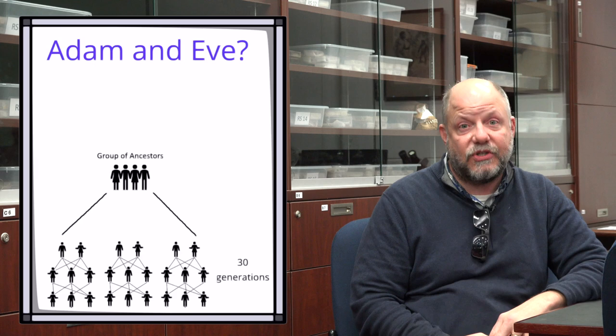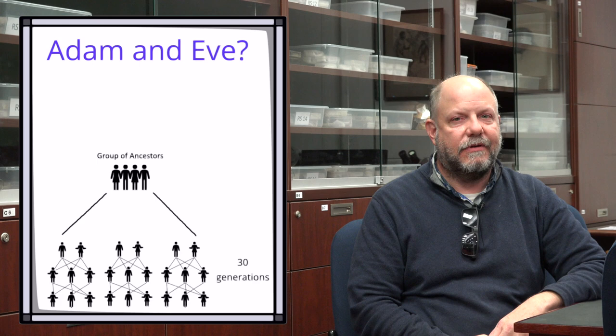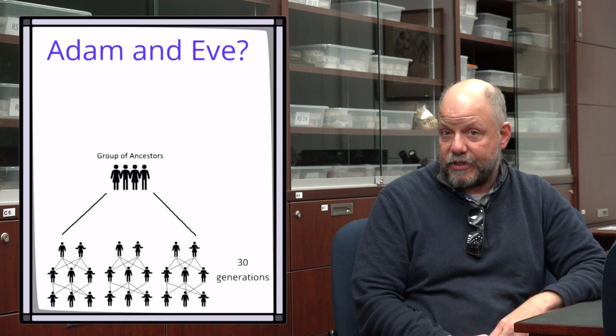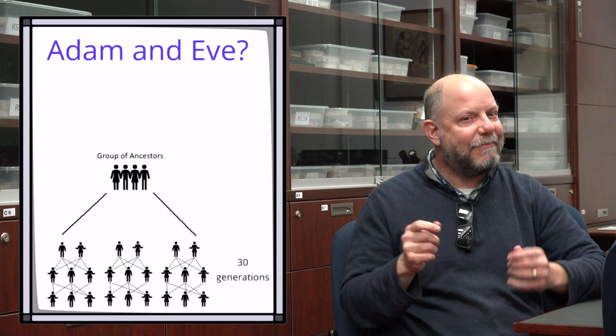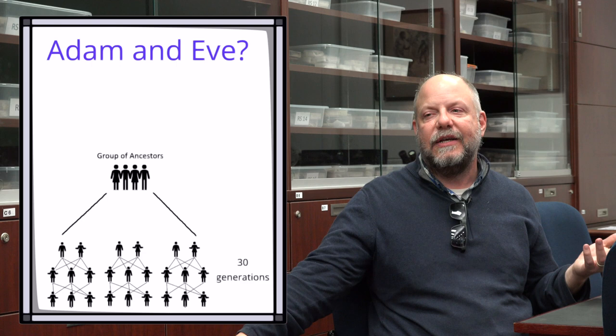Within probably 5,000 years ago, every human on earth has somebody that all of us could potentially trace as a genealogical ancestor if we knew our genealogies, right? That's not so long ago. And believe me, I'm a skeptic about this. I look at this and I'm like, wait a minute, what about parts of the world that were super isolated from other parts at that time?